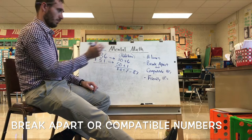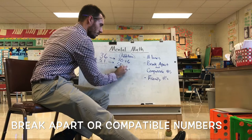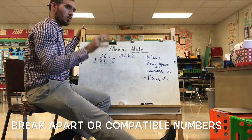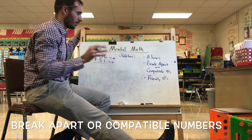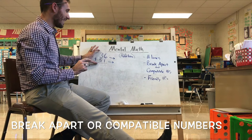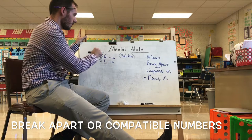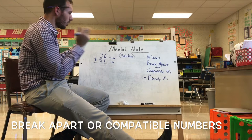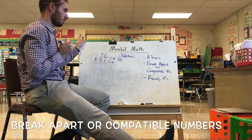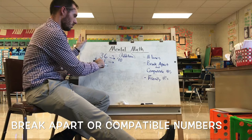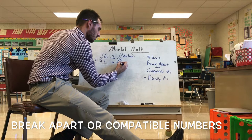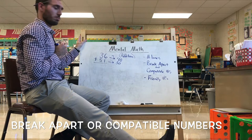Within the same break-apart category, you can use compatible numbers. Compatible numbers work similarly to a number line approach — I like to add by twos, fives, or tens, so I need to find numbers close to those. Very similar to rounding: I have 36, and something close to that would be 40. That's my compatible number. For 51, I'd go to 50. So I'm looking for an estimated answer of about 90.